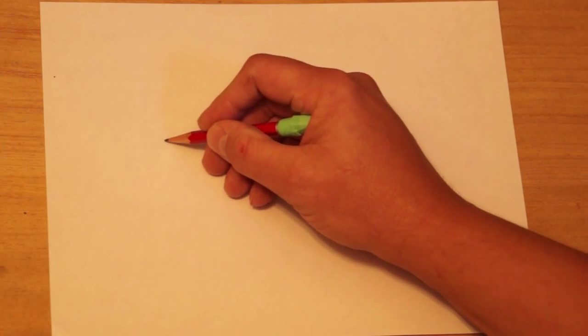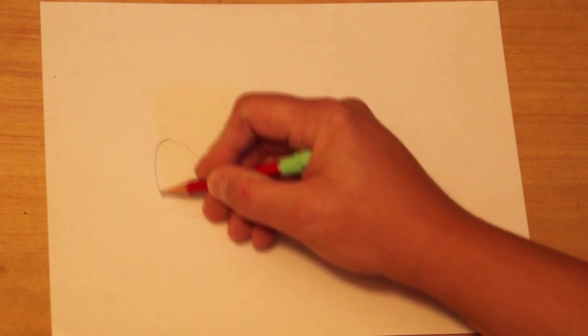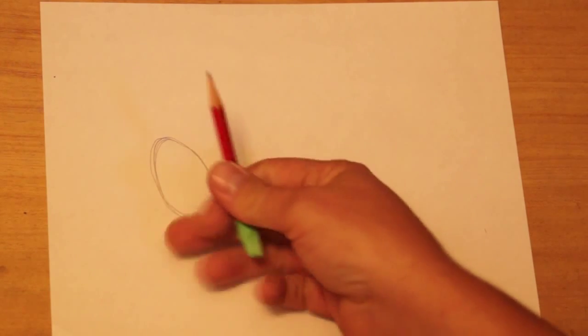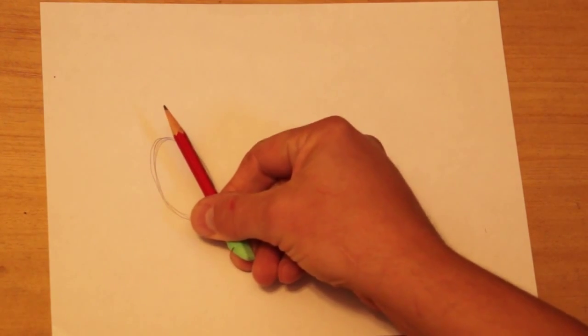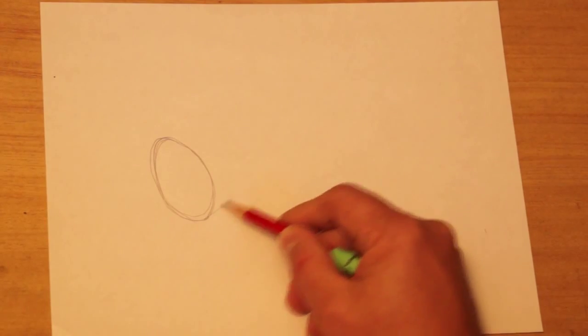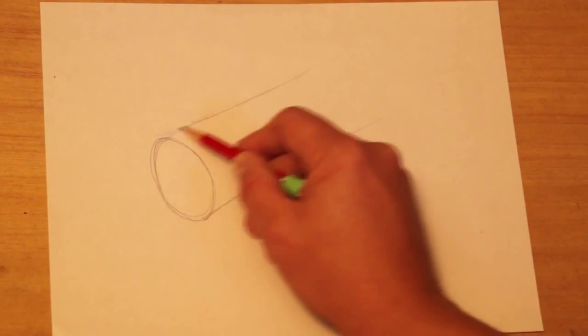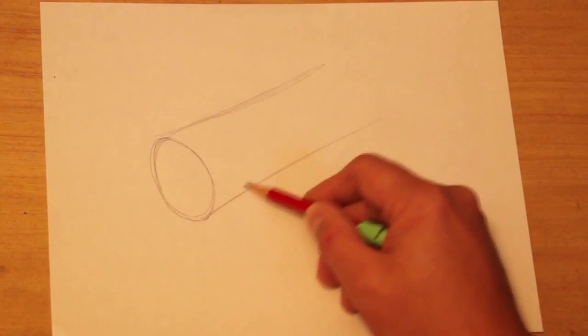First of all I want to start with an oval shape. It's slightly tilted, it's not really straight up and down, it's kind of tilted to the left and then I want to make two parallel lines that extend off to the upper right and I'm going to kind of curve them in towards the middle.